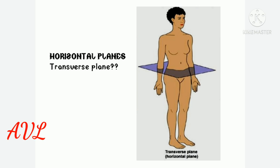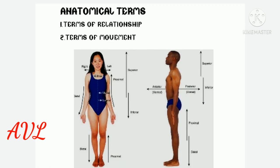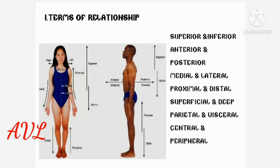The horizontal or transverse plane is at a right angle to both the sagittal and coronal planes, and divides the body into upper and lower parts. Anatomical terminologies are important for students to communicate with professional colleagues and for understanding the subject. Key terms describing relationships in anatomy include: superior and inferior, anterior and posterior, medial and lateral, proximal and distal, superficial and deep, parietal and visceral, and central and peripheral.